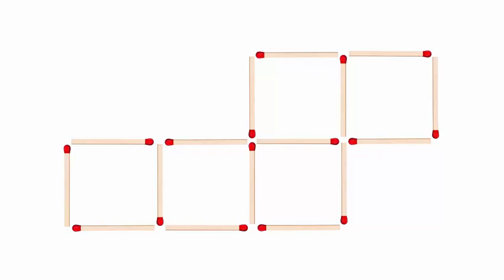But how do we make exactly 4 squares instead of 5 by moving just 2 matchsticks to different positions in the puzzle?